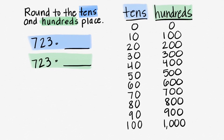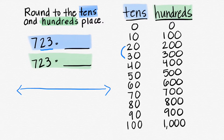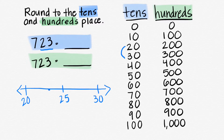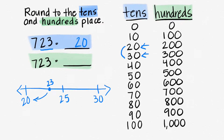723 rounded to the tens place. We are only looking at the tens, so 23 would fall somewhere between 20 and 30. Let's make our number line: 20, 30, halfway is 25. 23 is before the 25. Is 23 closer to 20 or closer to 30? It's closer to 20, so we're going to write 20. But 723 isn't close to 20 — it's close to 720.